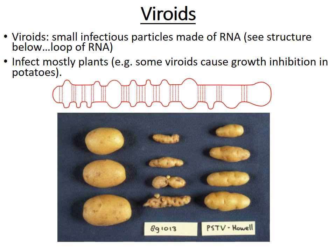Viroids are infectious particles that don't have a protein casing — they are simply loops of RNA. They can infect organisms, mostly plants. For example, viroids can infect potato plants and prevent the potatoes from growing, causing growth inhibition.